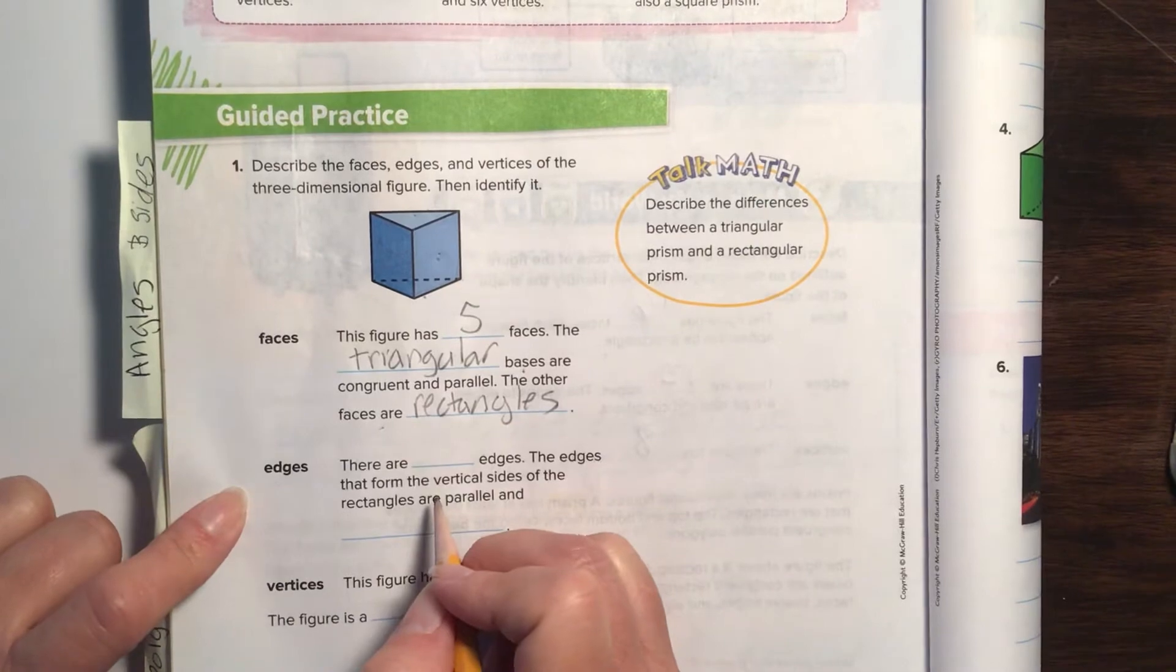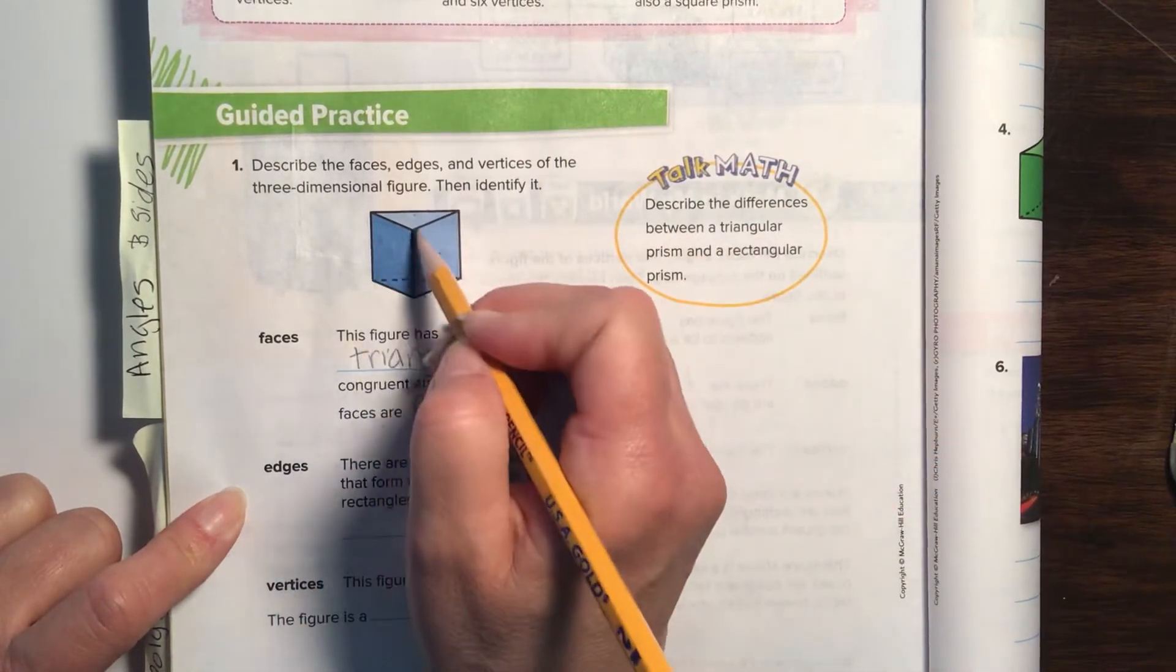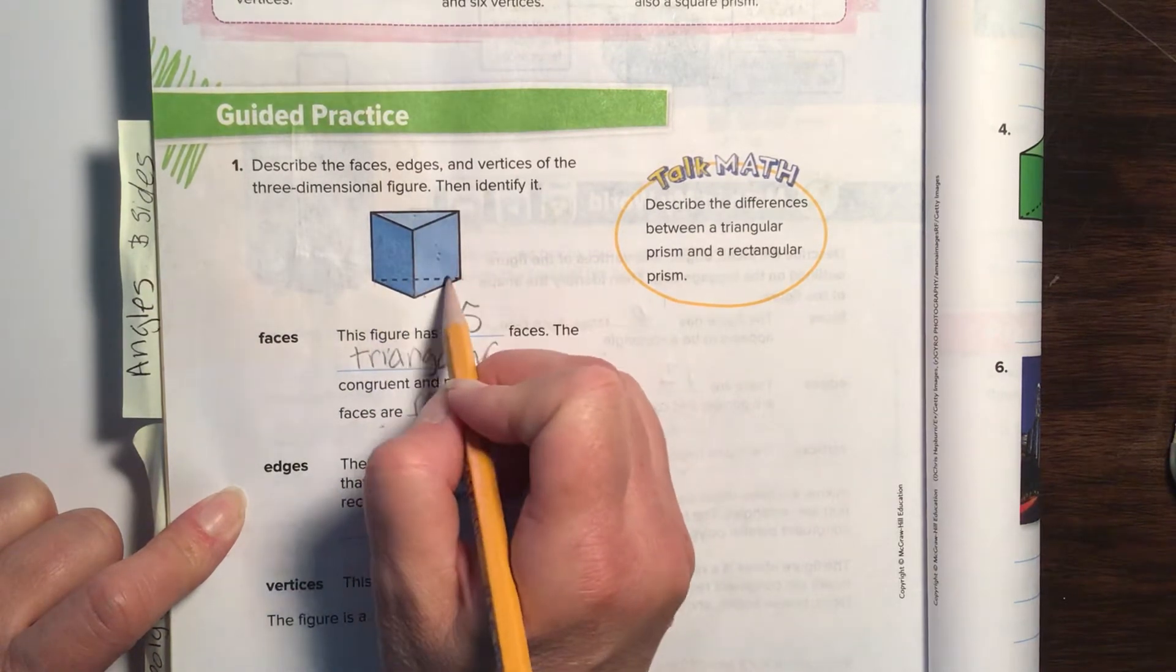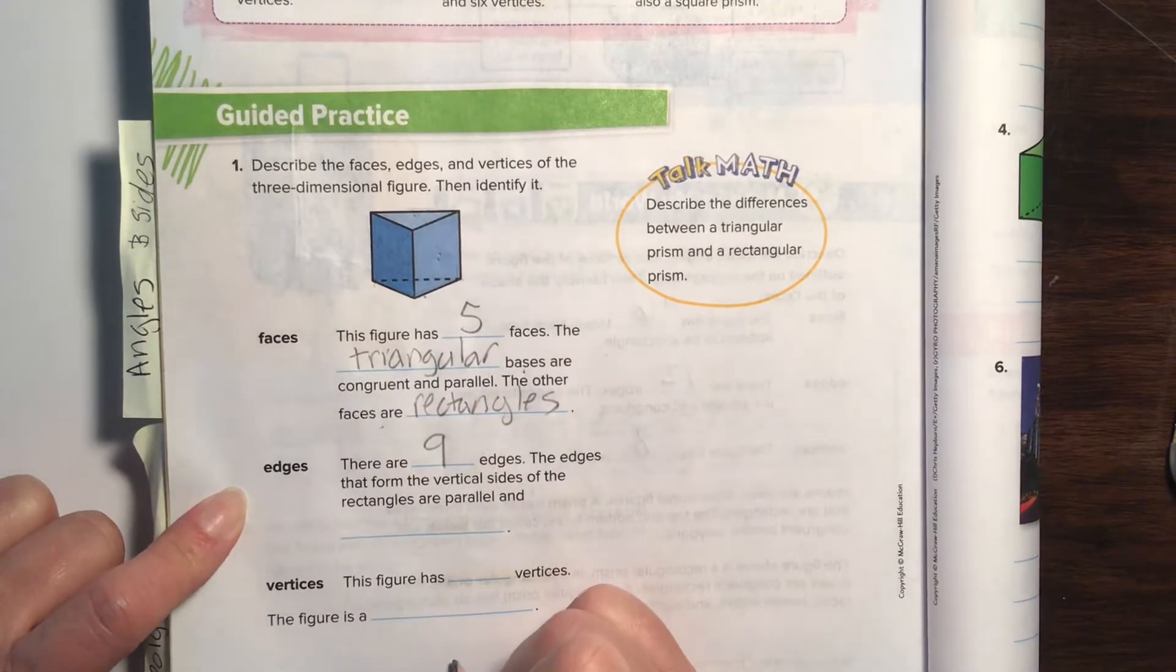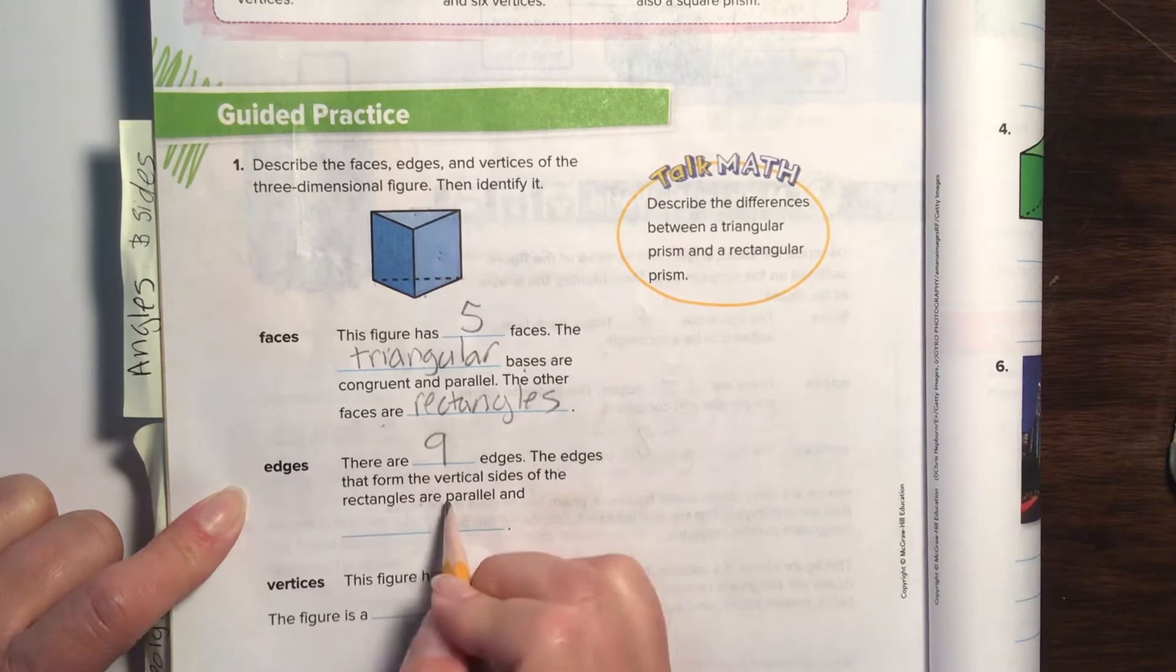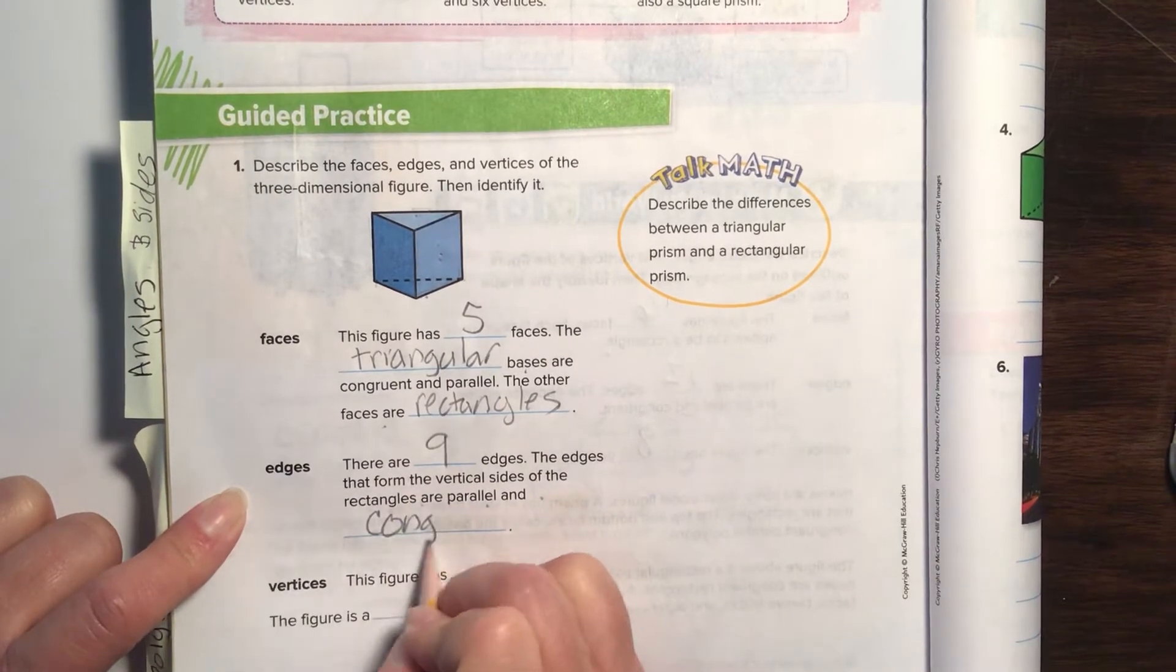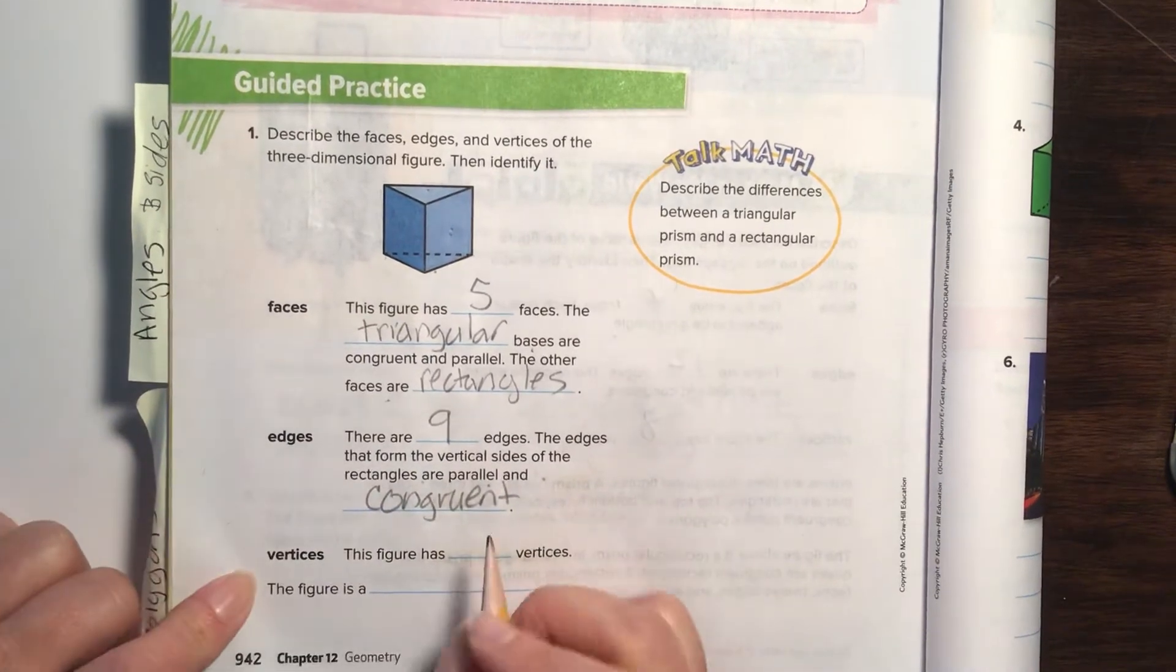Now we're going to talk about the edges. Let's count the edges: one, two, three, four, five, six, seven, eight, nine. Good job. The edges that form the vertical sides of the rectangles are parallel and are a fun little word: same length—congruent.